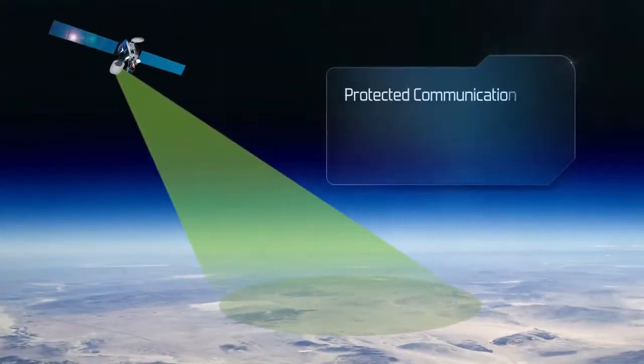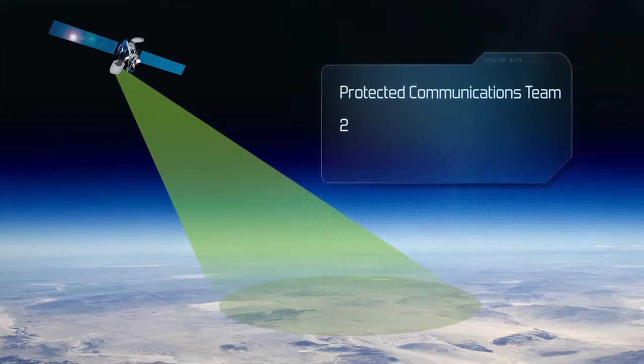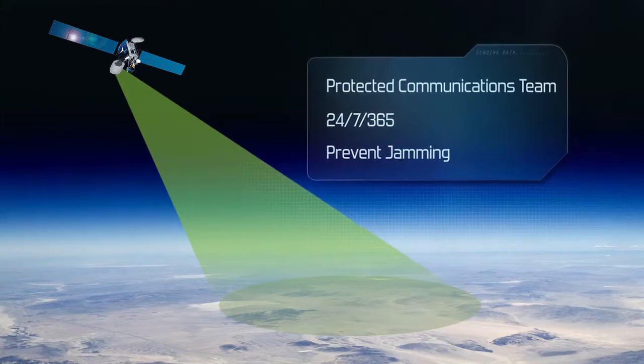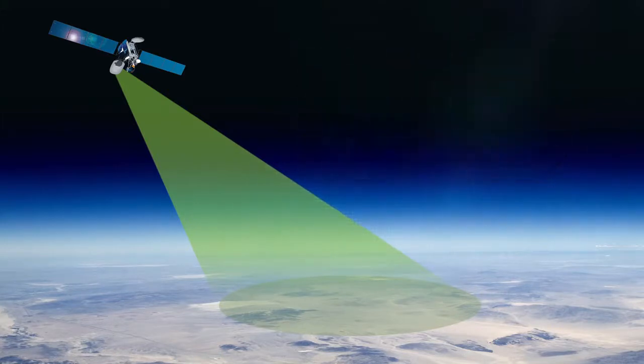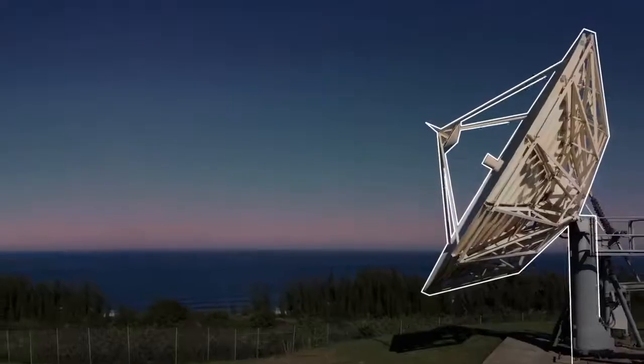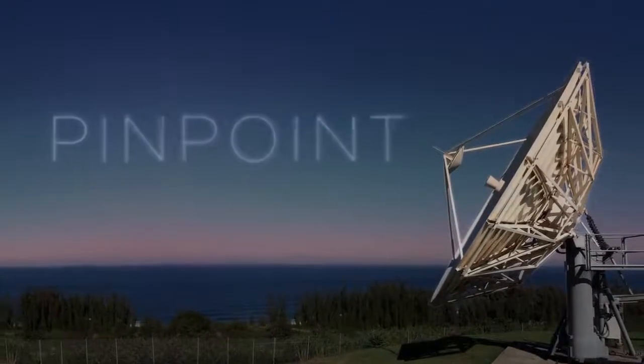Intelsat General's Protected Communications team works 24-7, 365 days a year to prevent jamming and work around it when it occurs. When they detect interference, our experts work quickly to restore operations and pinpoint the source of the disruption.